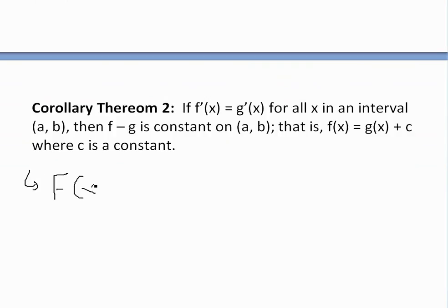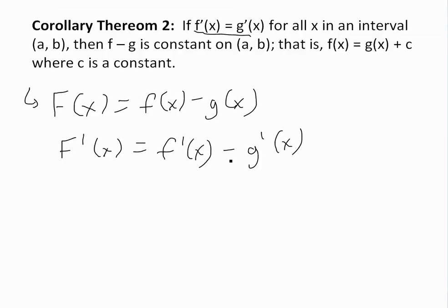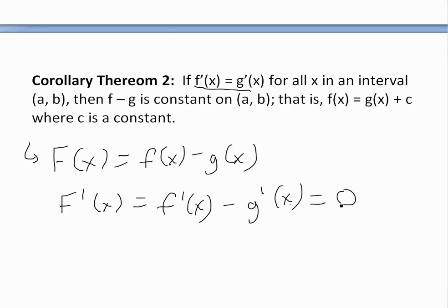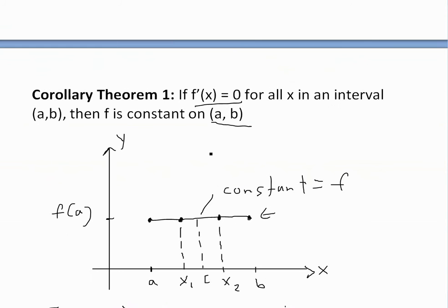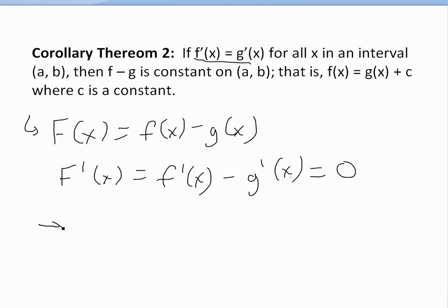If we let capital F(x) equal f(x) minus g(x), then the derivative F'(x) equals f'(x) minus g'(x). Since we're given that f'(x) equals g'(x), we're subtracting the same value, so this equals zero. If this equals zero, then we have the exact same theorem as before — where the derivative is zero for all x in an interval, then F is constant.